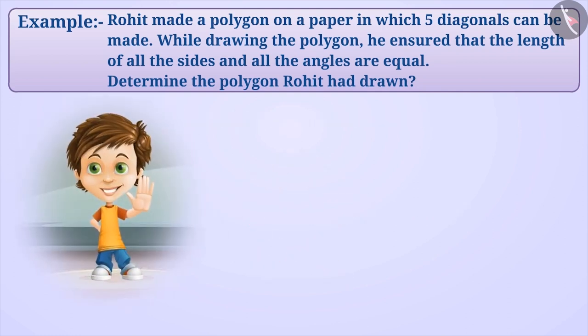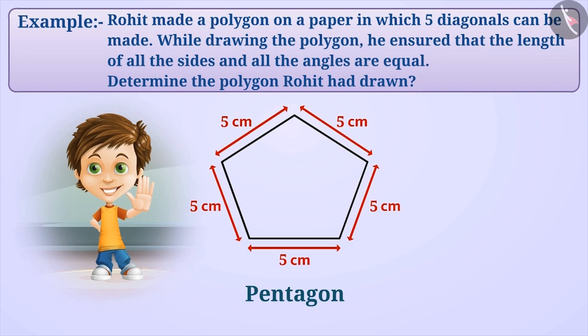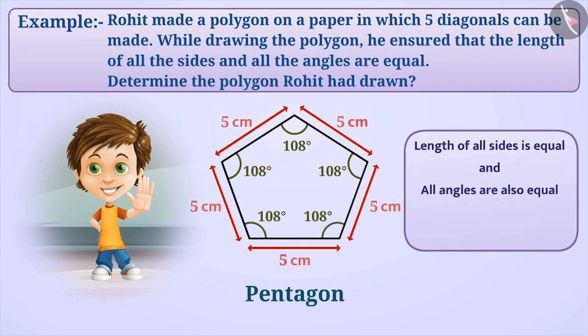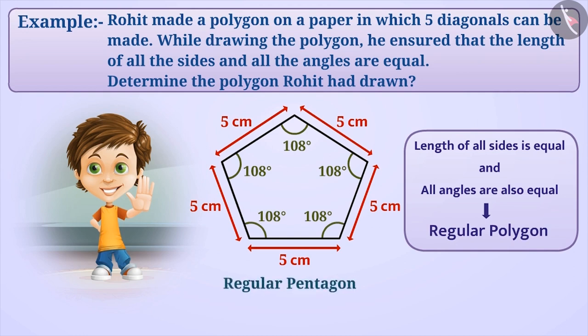Therefore, Rohit must have drawn a pentagon. But, the length of all the sides of the polygon formed by him are equal and all the angles are also equal. If the length of all the sides of a polygon are equal and all the angles are also equal, then we call it a regular polygon. With this understanding, we can say that Rohit has drawn a regular pentagon.